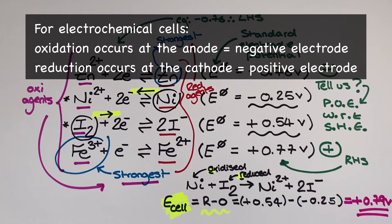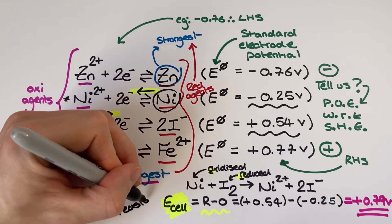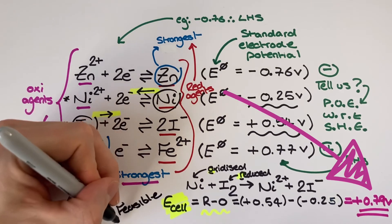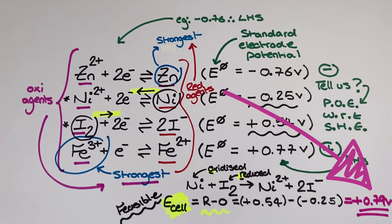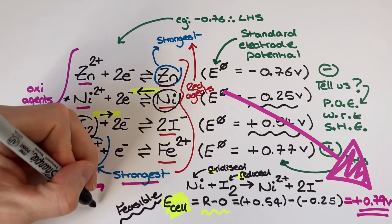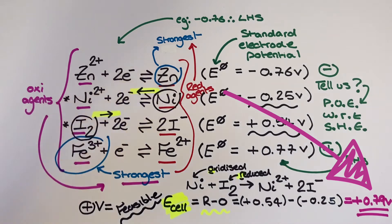Here for example it's the iodine electrode potential minus the nickel electrode potential. The answer comes out as positive 0.79 volts. And the fact that that value is a positive number tells me that this reaction is written in the feasible direction, with the correct component getting oxidized and the other correct component getting reduced.